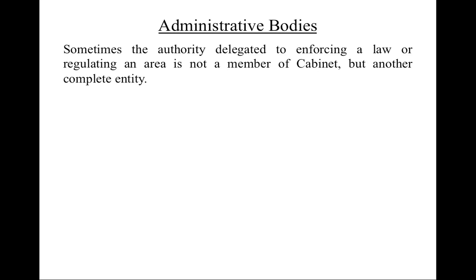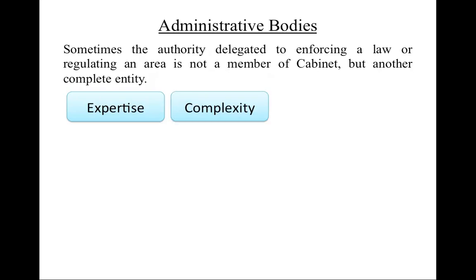The final source of law you need to know about are administrative bodies. Sometimes there is an area where the legislature or parliament is not the best suited to regulating, and they want to delegate their authority. With regulations, they delegate that authority to a member of the cabinet. In administrative law, they delegate that authority to a completely separate entity called an administrative body. The legislature might want to do this because, as lawmakers, they might lack expertise in an area, or the area might be very complex and require special knowledge or skills, such as the practice of medicine, or the area might require a lot of regular administration, minor rule changes, and oversight, which the elected lawmaking body is not well equipped to handle.